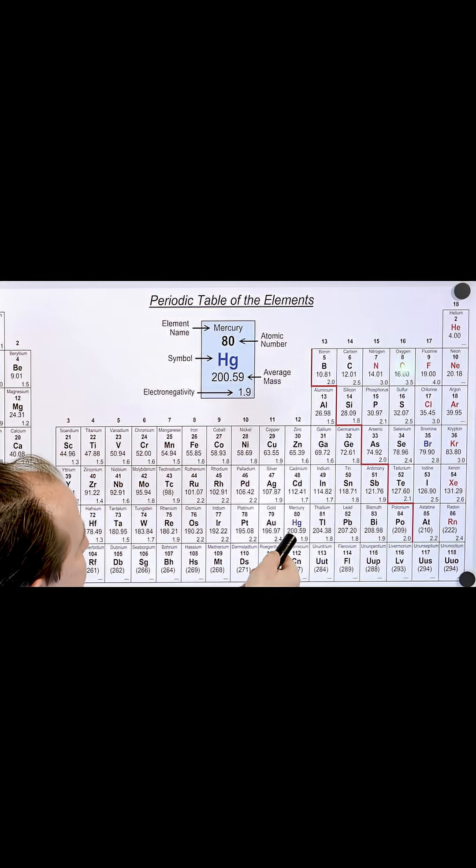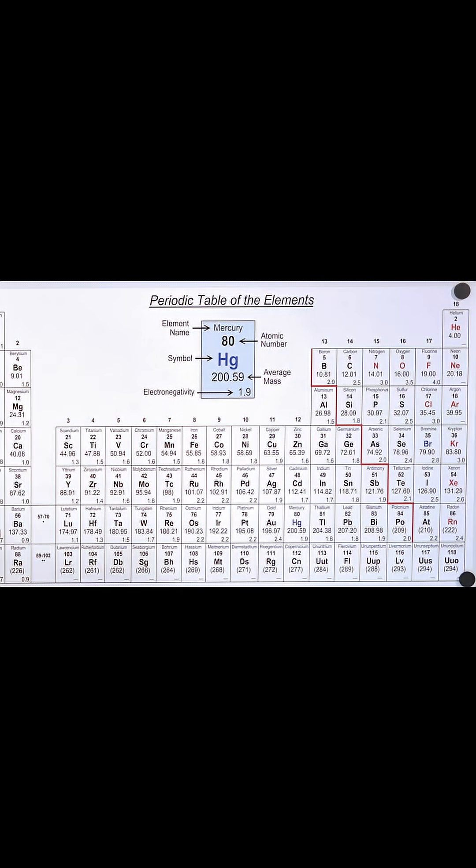In chemistry you learn that this column here, oxygen here, it likes to gain two electrons to look like neon. Sulfur in general likes to gain two electrons to look like argon.